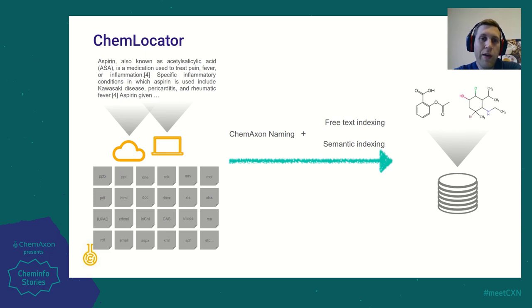However, if you would like to use something off-the-shelf, we already have some solutions. ChemLocator application is capable of automatically indexing a large amount of unstructured documents and making them chemically searchable. It also does the text indexing and offers a convenient search interface.